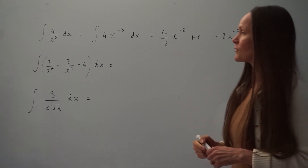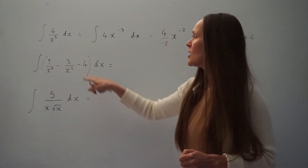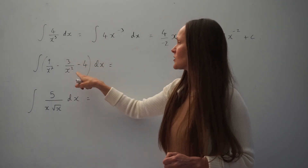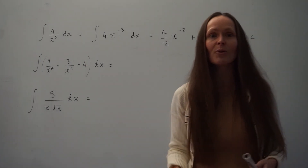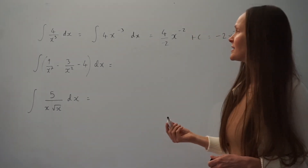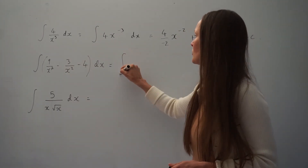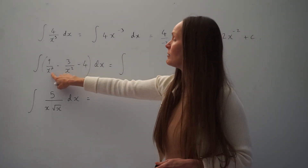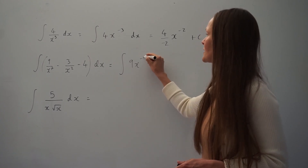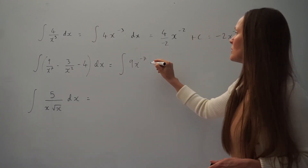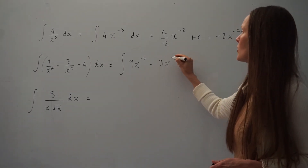In the next question, we have to find the integral of 9 over x raised to the power of 7, minus 3 divided by x squared, take away 4 with respect to x. Just like in the first example, I'm going to rewrite the question in its power form. So 9/x⁷ becomes 9x raised to the power of negative 7, and negative 3/x² becomes negative 3x raised to the power of negative 2.